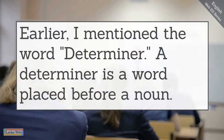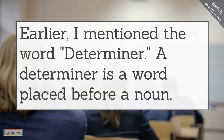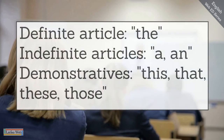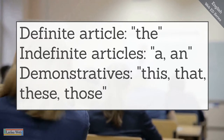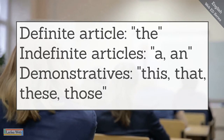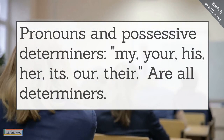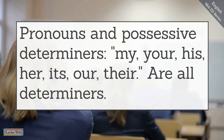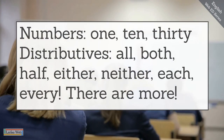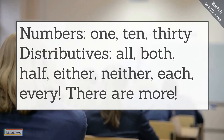A determiner is a word placed before a noun. We use determiners to express quantities or to communicate what the noun refers to. Definite article: the. Indefinite articles: a and an. Demonstratives: this, that, these, those. Pronouns and possessive determiners: my, your, his, her, its, our, and their are all determiners. Numbers: 1, 10, 30. Distributives: all, both, half, either, neither, each, every. There are more.